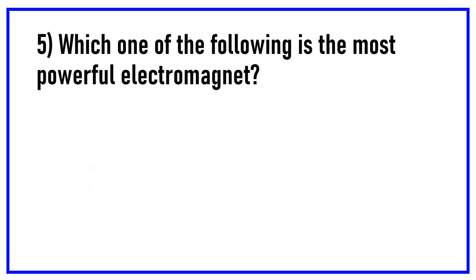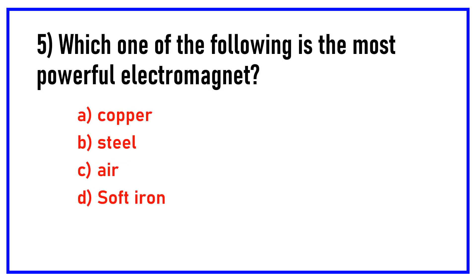Which one of the following is the most powerful electromagnet? Options are: copper, steel, air, soft iron. Answer: Soft iron.